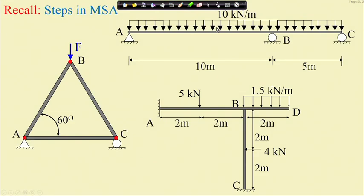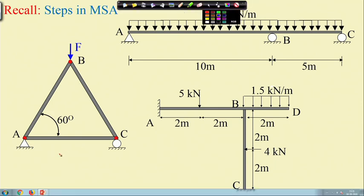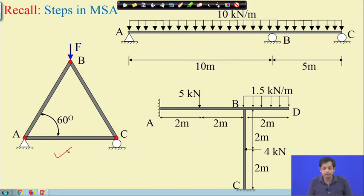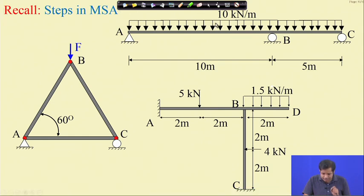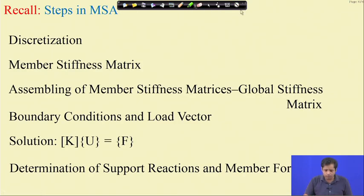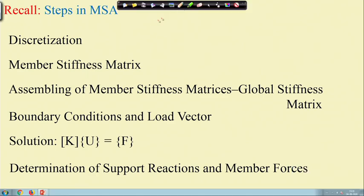We already demonstrated these steps for truss problems, which we discussed in detail last week. This week we discuss how to apply all these steps in the context of beam problems. The next week we will do the similar exercise for frame problems. Particularly in this lecture today we will talk about two steps: discretization and the member stiffness matrix. In the next class we will see how to assemble the stiffness matrices.